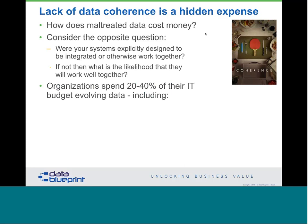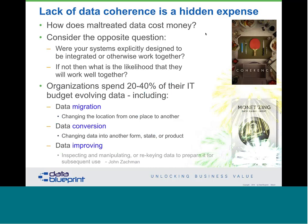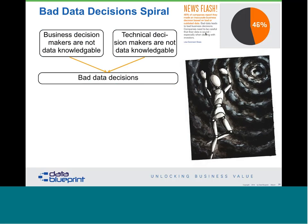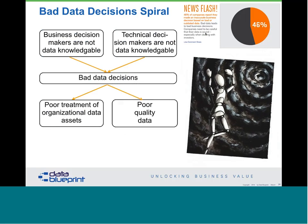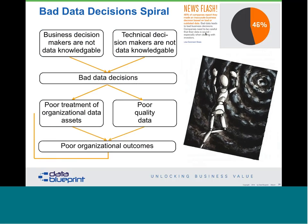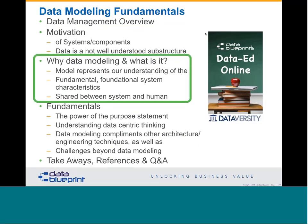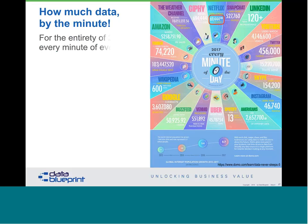This is death by a thousand cuts because maltreated data costs a lot of money. Think about the opposite question: were your systems explicitly designed to be integrated or work together? If you're anything other than an integrated software package or ERP, they probably weren't designed to work together from the bottom up. So there's our 20 to 40% figure: data conversion, improvement, and evolution are costing organizations lots of money. This leads to my bad data decision spirals, where business and technical decision makers who are not data-knowledgeable make bad decisions, leading to poor treatment of organizational data assets and poor organizational outcomes.